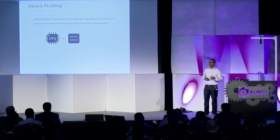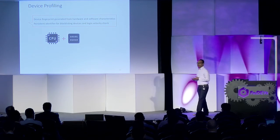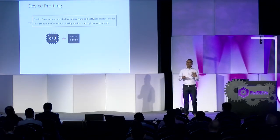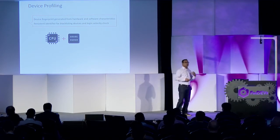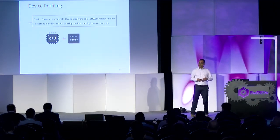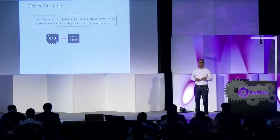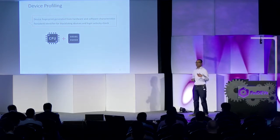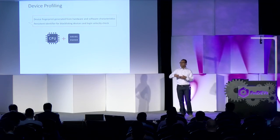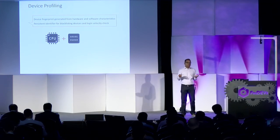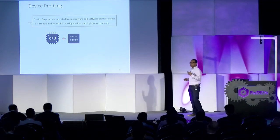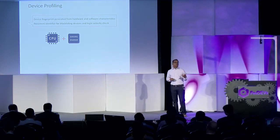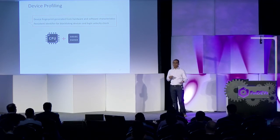One of the things we do is what we call device profiling. As part of the device profile, we derive a unique device ID based on very specific hardware and software characteristics of the underlying device. This is generated dynamically and on the fly — it's not like a cookie or a token that can be stolen or duplicated. We also derive a person identifier that helps us keep track of bad devices seen across all our customers, leveraging the network effect.